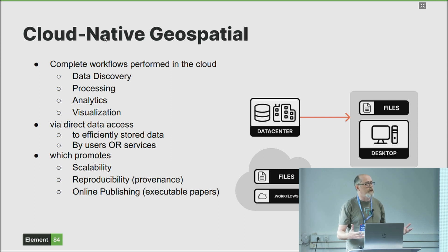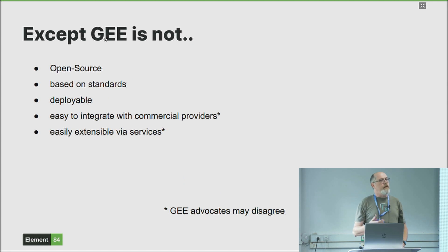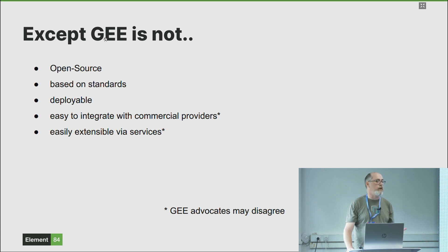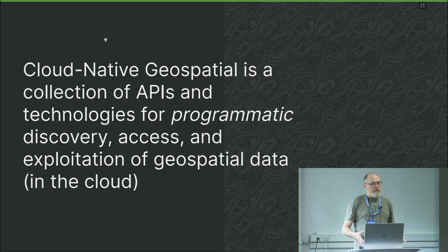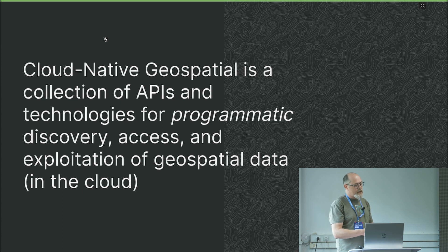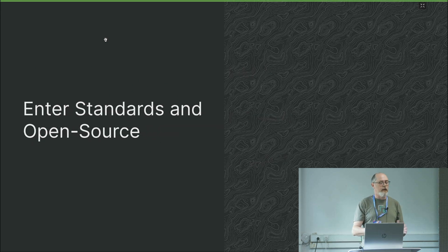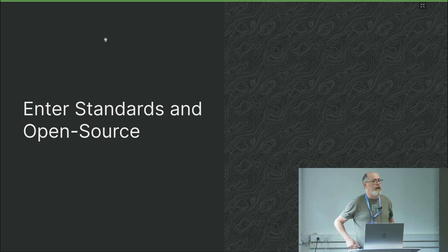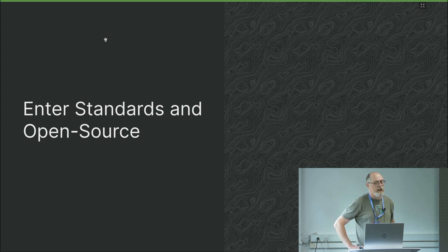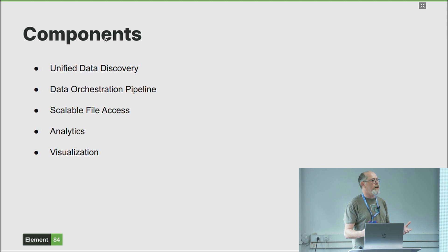It's easy to reproduce analysis because you don't have to worry about downloading data or not having access to it, and you can publish results online. But the issue with Google Earth Engine is that it's not open source, it's not based on any standards, you can't deploy it in your own account, and you can't easily integrate with commercial data providers or build things on top of it. So cloud native geospatial is really a collection of APIs and technologies for programmatic access and exploitation of geospatial data in the cloud. Enter standards and open source — this was 2010, and it took some time to catch up.